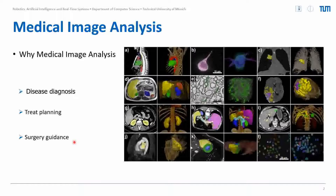In this work, we explore the transformer model for medical image segmentation. Currently, medical image segmentation methods mainly rely on fully convolutional neural networks with notable structures such as U-Net, X-U-Net, U-Net++, U-Net-TriplePlus, and 3D U-Net.